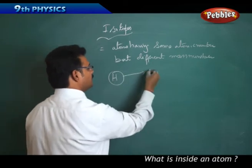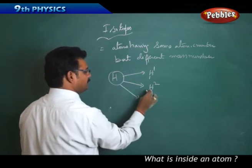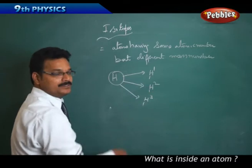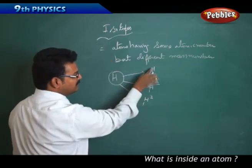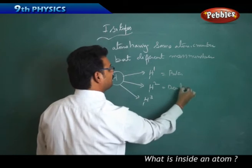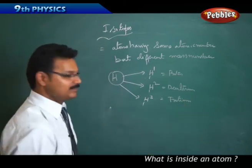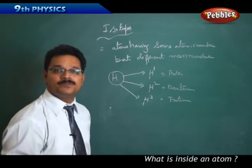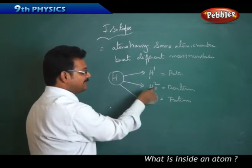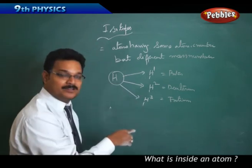Hydrogen has three isotopes: H-1-1, H-1-2, and H-1-3. They all have the same atomic number of 1, but different mass numbers. H-1-1 is called protium, H-1-2 is called deuterium (deu means two), and H-1-3 is called tritium (tri means three). Deuterium is heavier than protium, and tritium is heavier than deuterium because mass numbers are increasing.